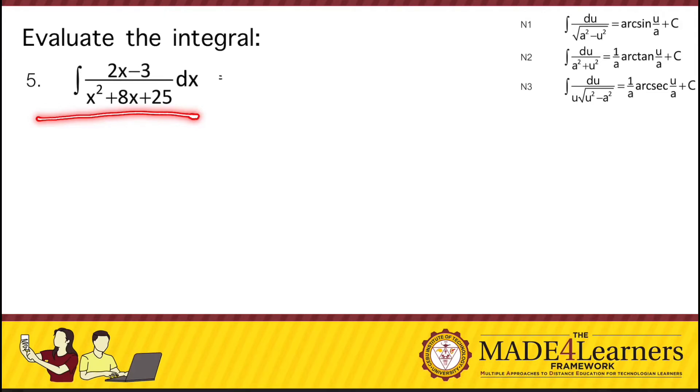So if we base it on these three formulas on the right, the only formula that does not have a square root or a radical sign is N sub 2.